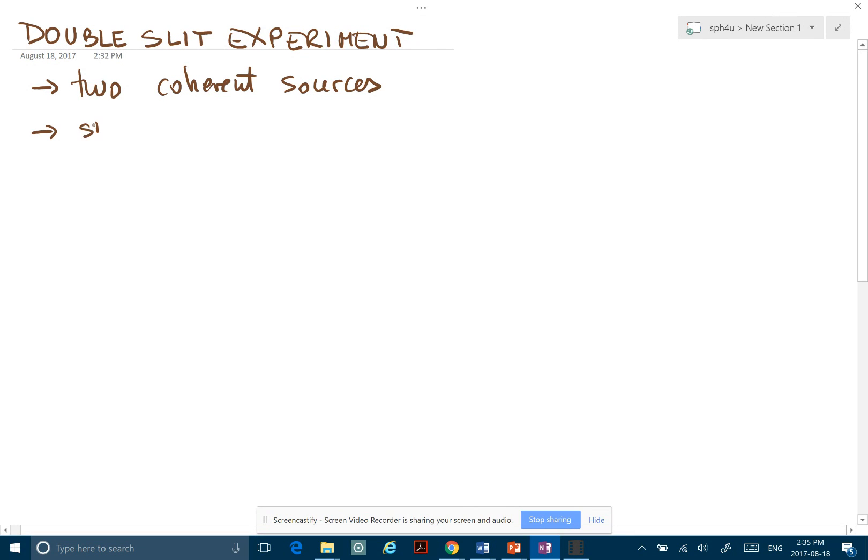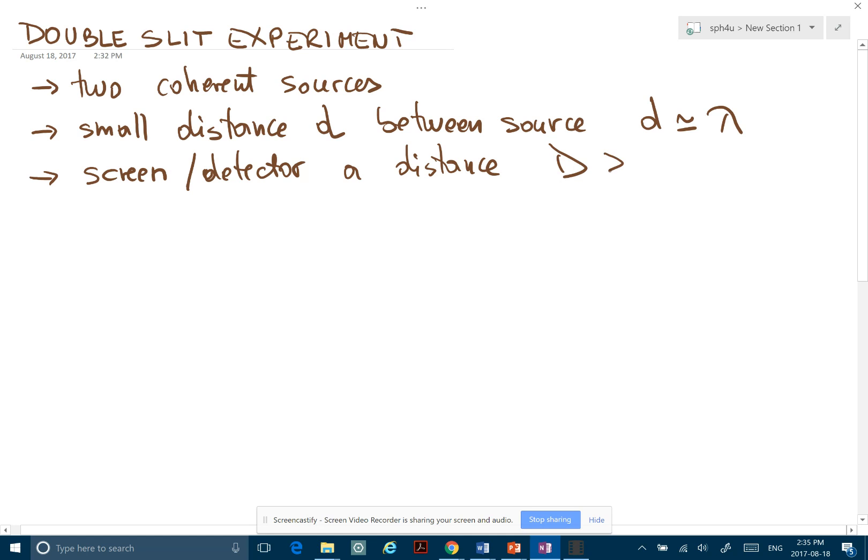We need a small distance between the sources, and usually this distance is comparable to the wavelength of the wave that we're studying. Now we need some sort of a screen or detector, a distance D which is much greater than the actual distance between the two sources.